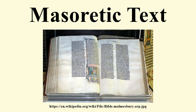The Masoretic text was primarily copied, edited, and distributed by a group of Jews known as the Masoretes between the 7th and 10th centuries CE. Though the consonants differ little from the text generally accepted in the early 2nd century, it has numerous differences of both greater and lesser significance when compared to manuscripts of the Septuagint, a Greek translation of the Hebrew scriptures that was in popular use in Egypt and Israel. The Hebrew word Mesorah refers to the transmission of a tradition.